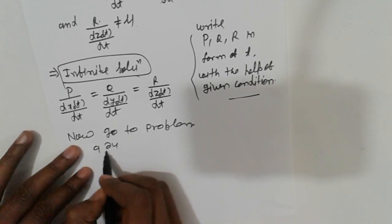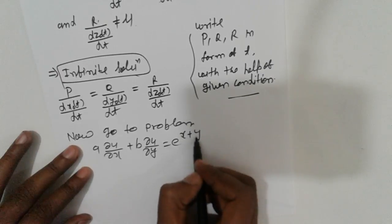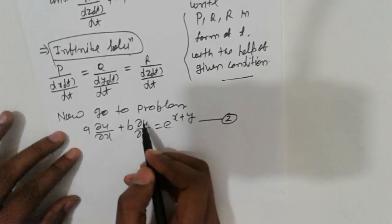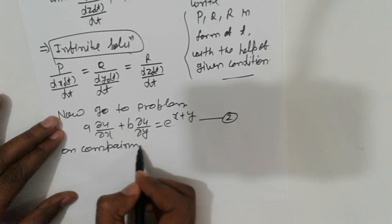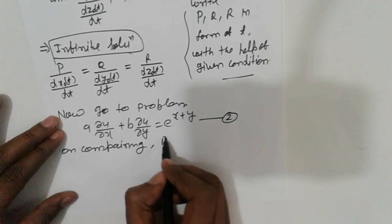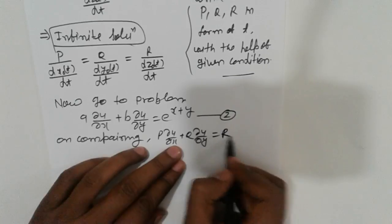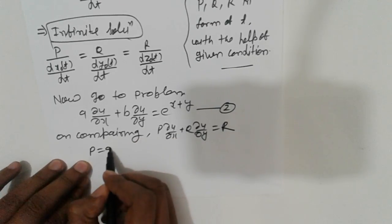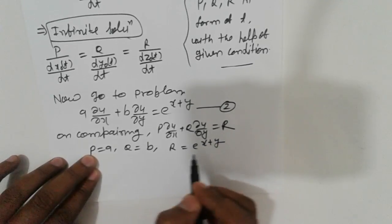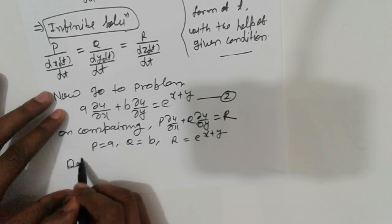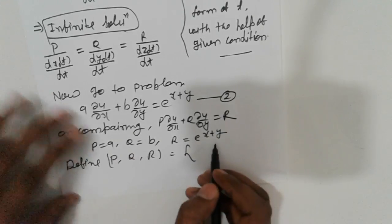Now going to the problem: a del u/del x + b del u/del y = e raised to x plus y. On comparing with the standard form p del u/del x + q del u/del y = r, we get p equal to a and q equal to b.